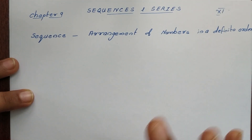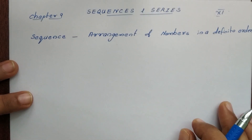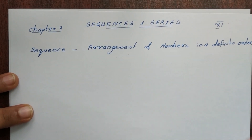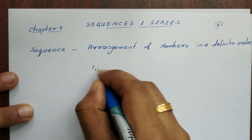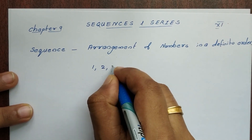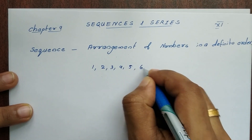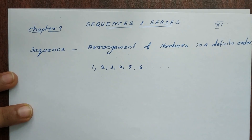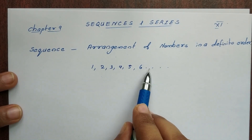That is numbers in a particular order. For example, 1, 2, 3, 4, 5, 6, etc. This is a sequence because there is a definite order.